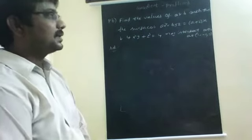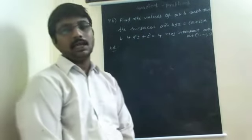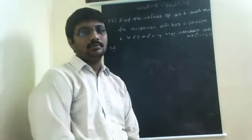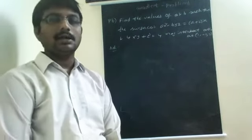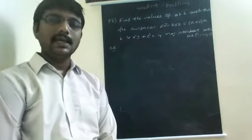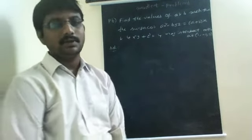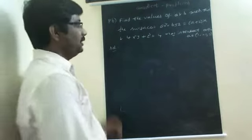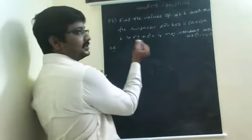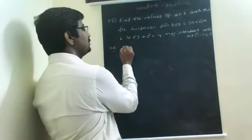These two surfaces are intersecting orthogonally at the point (1, −1, 2). We have to find out the constants A and B. For the given surfaces, let them be F and G.